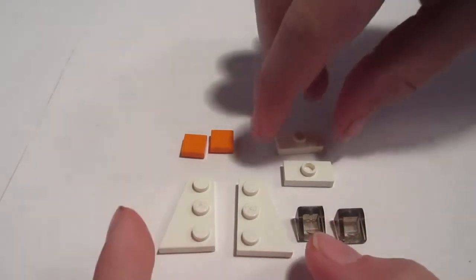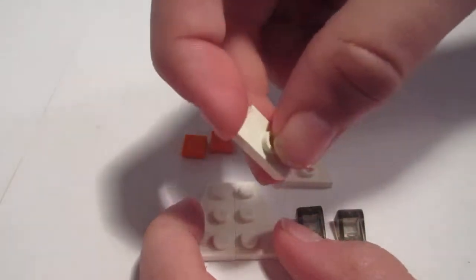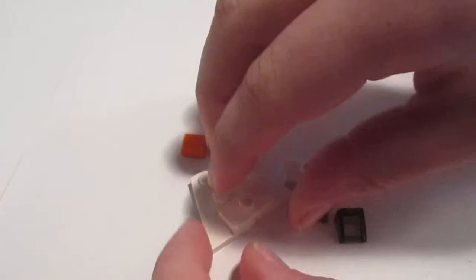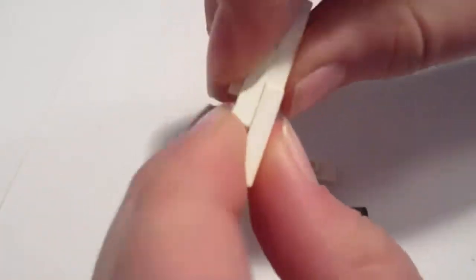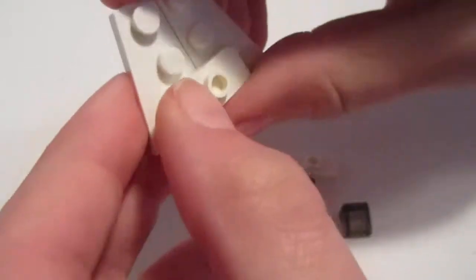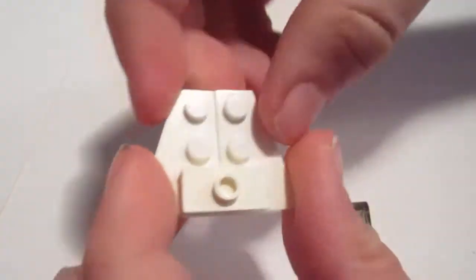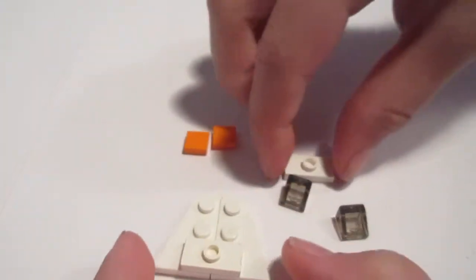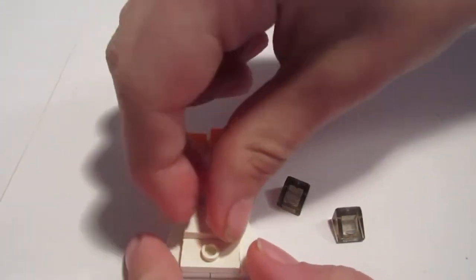So first we're going to start by taking your jumper plate and you're going to put it on the back right there. So you should have something that looks like this. Then you're going to take your other jumper plate and put it right here.